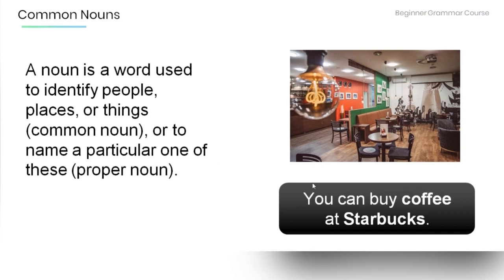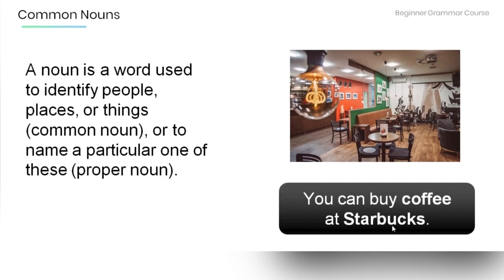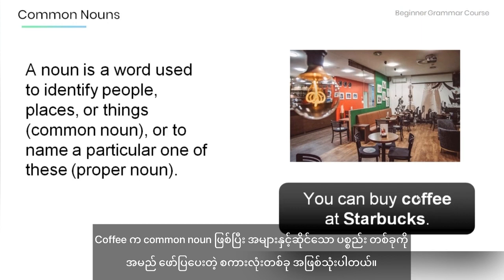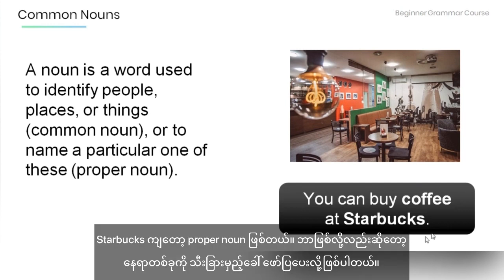For example, in this sentence: you can buy coffee at Starbucks. Coffee is a common noun — it is a word used to identify a thing. Starbucks, on the other hand, is a proper noun because it is used to identify a particular place.